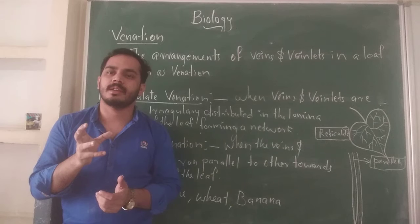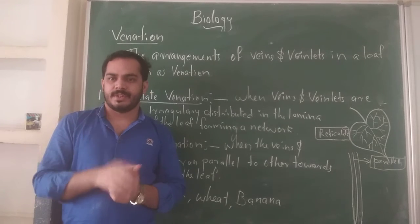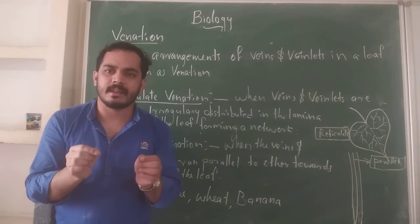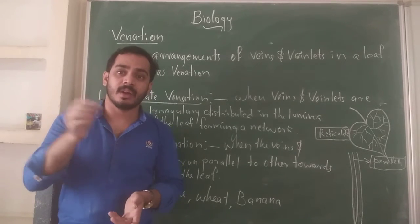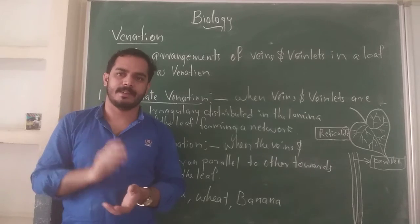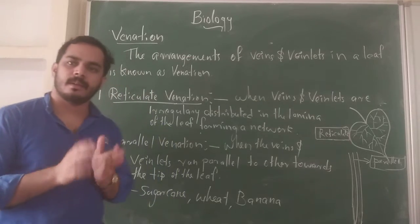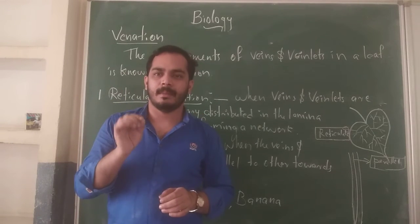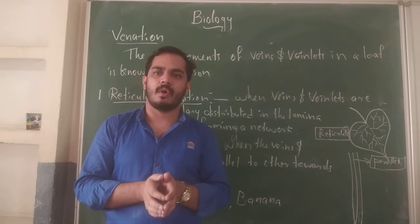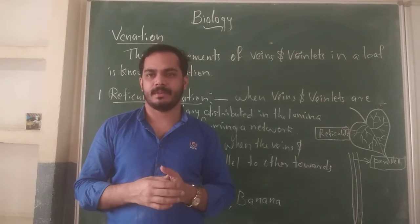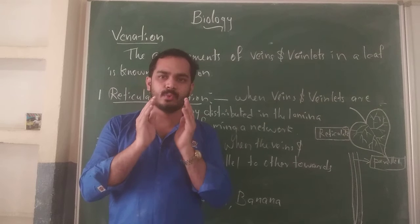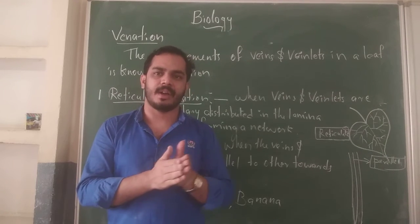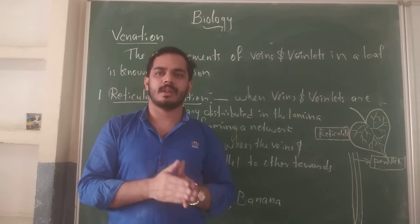This is called reticulate Venation — it is very simple and easy to identify. The veins and veinlets are distributed irregularly, not in an arranged way. The examples of reticulate Venation are the peepal leaf and the mango leaf. When you go outside, you can easily find and identify which one is reticulate and which one is parallel.